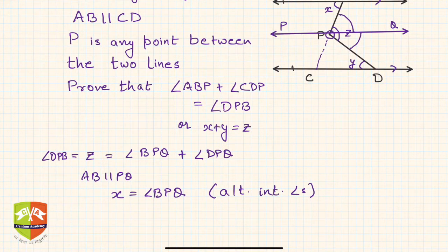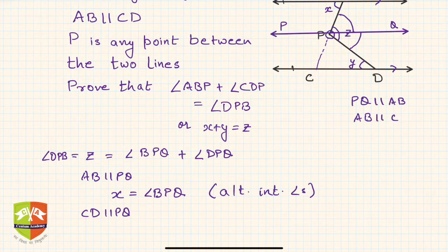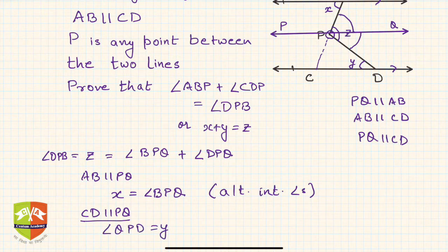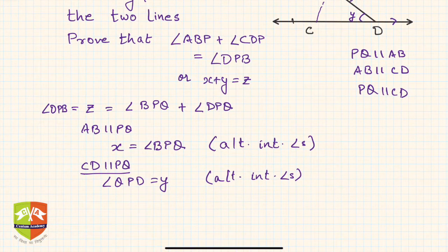Similarly, CD is parallel to PQ. We had drawn PQ parallel to AB, and AB was parallel to CD given, which means PQ is also parallel to CD. So we are using that here, and from here you can say angle QPD equals y. Again, same reason: alternate interior angles.